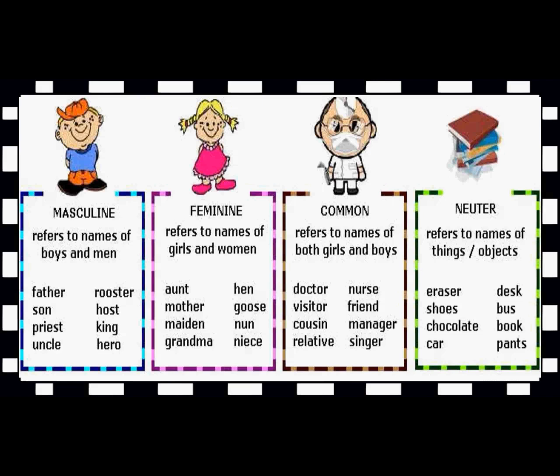So there are four kinds of gender. Masculine gender refers to names of boys or men — that is, male. Can you see the examples? Father, son, priest, uncle, rooster, horse, king, hero. All these nouns refer to boys or men, so we call it male.